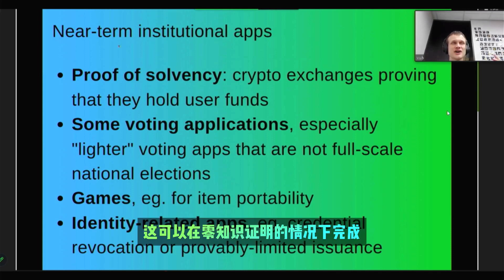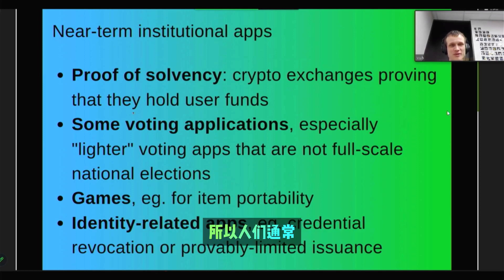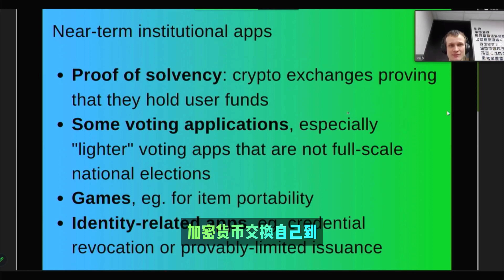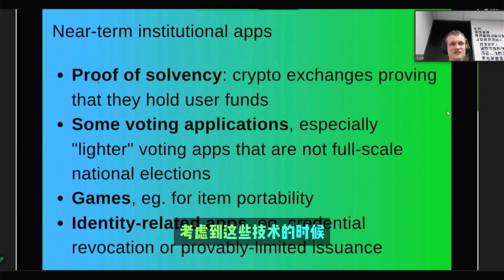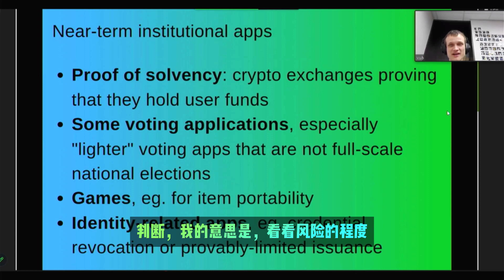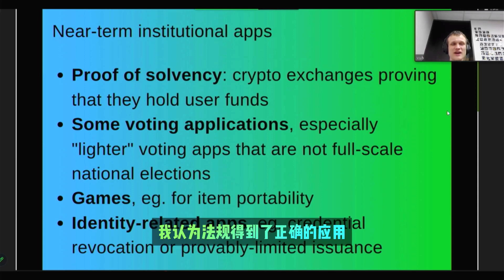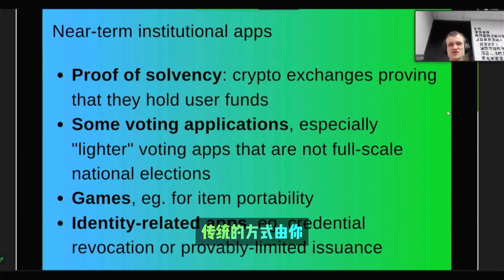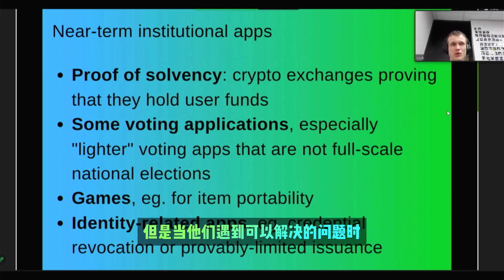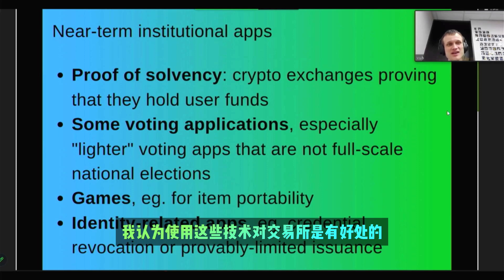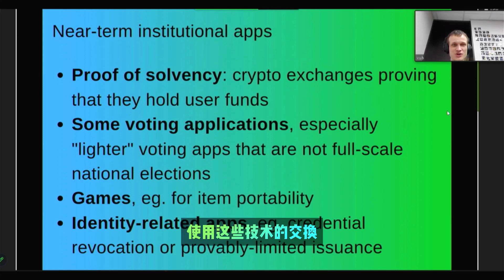This can be done with zero knowledge proofs, and it is basically a type of Validium. I highly encourage crypto exchanges to use this technology. I also encourage regulators to take these technologies into account when judging the risk level of a particular exchange and what regulations get applied. The more that someone proves things technologically, the less they need to prove the traditional way — by proving they are a trustworthy person, having licenses, insurance, and these kinds of standard techniques. Cryptographic techniques cannot solve all problems, but when there is a problem they can solve, it's good to use and reward these techniques.